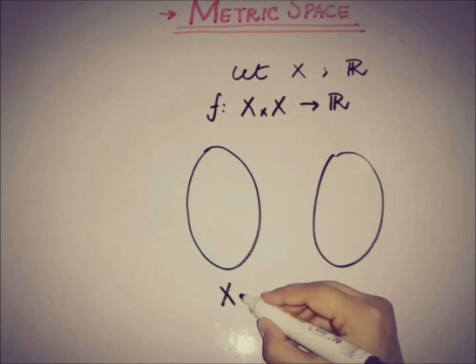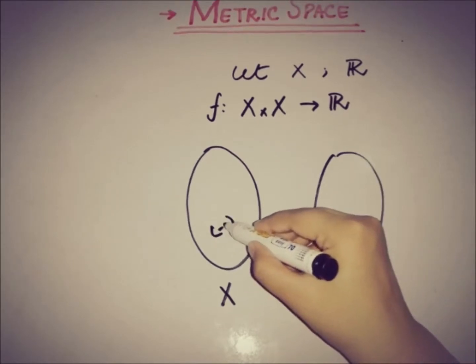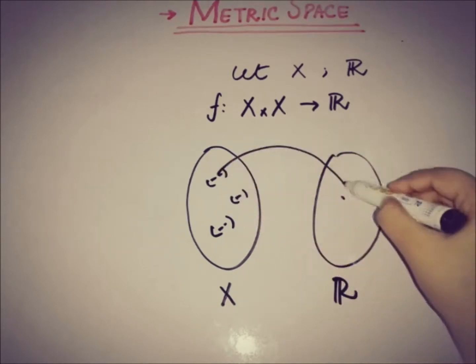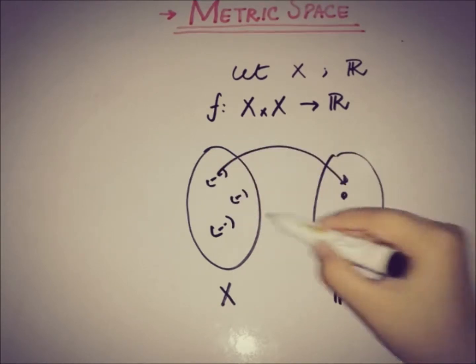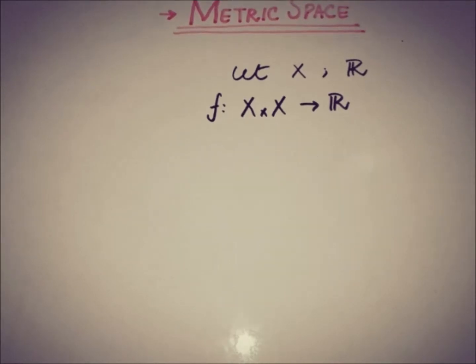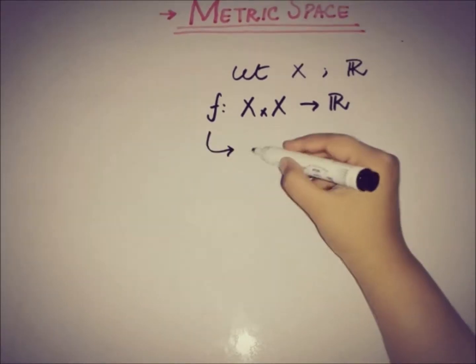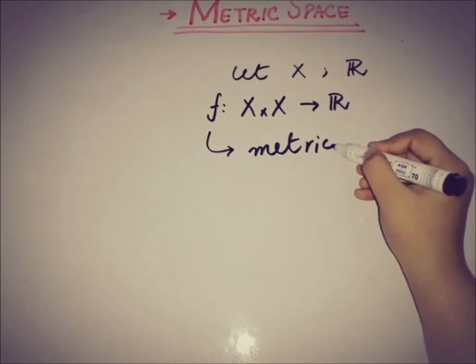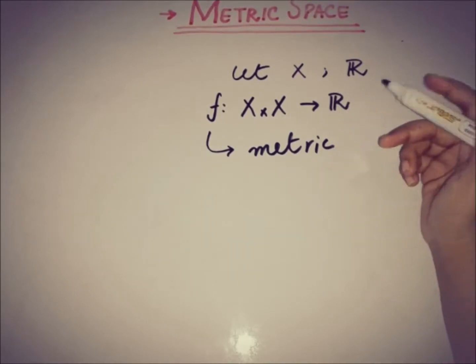There are pairs here and we will map on a single value here, and it will go here and so on. So this is the rough sketch of the function from X cross X to R. This function f is said to be a metric on the set X if it has the following properties.